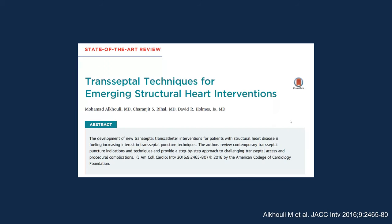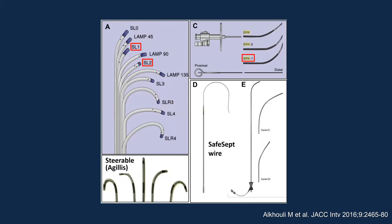There is a very important review paper from 2016 on transeptal techniques for emerging structural heart interventions — I encourage you all to read and download it. There are a number of catheters for transeptal access: some are non-steerable as shown in panel A, some are steerable as shown at the bottom, and panel C represents different pre-curved needles. There is also the SafeSept wire for mechanical puncture, and the Baylis radiofrequency needle.